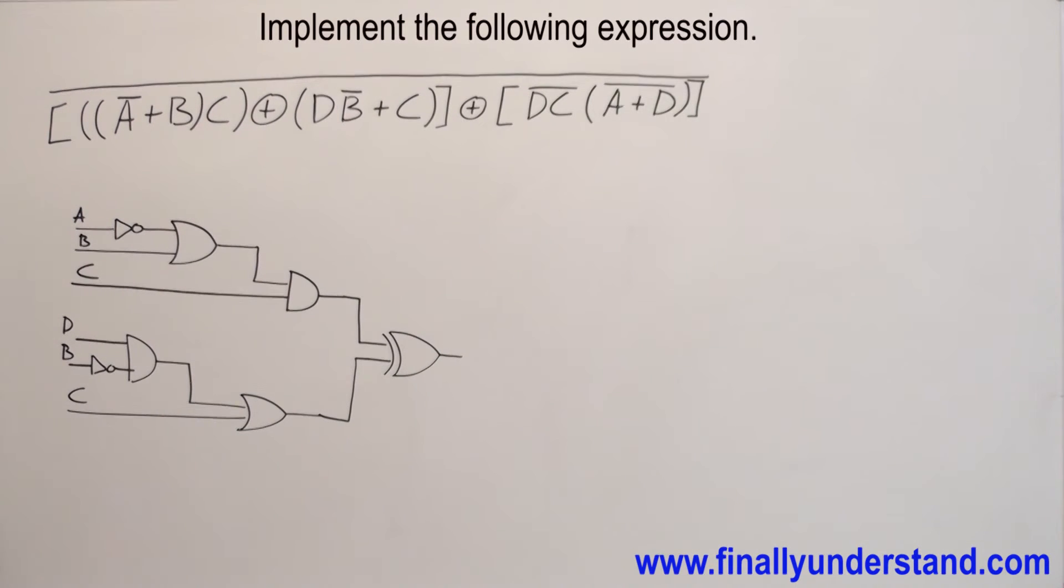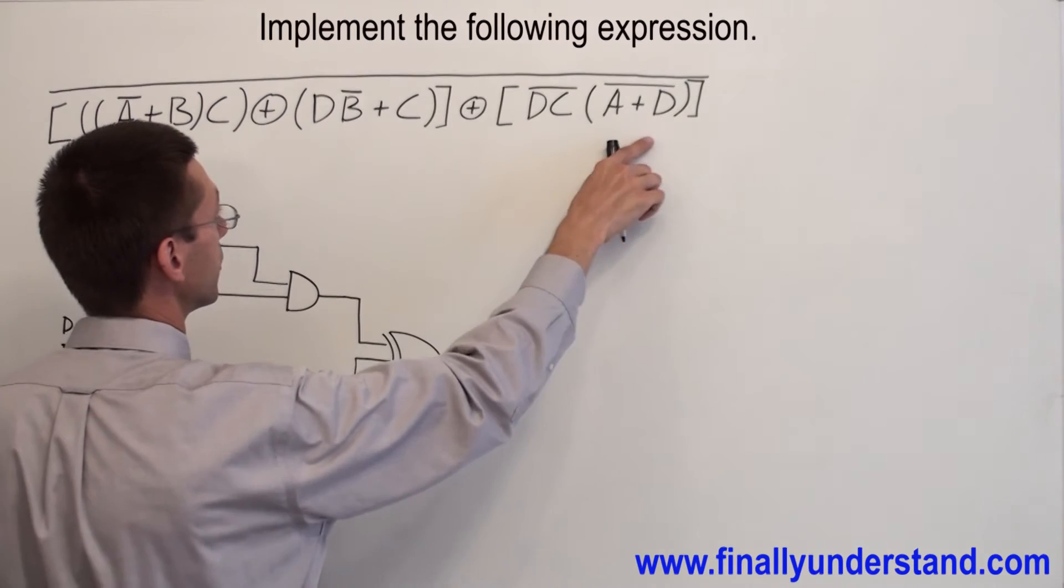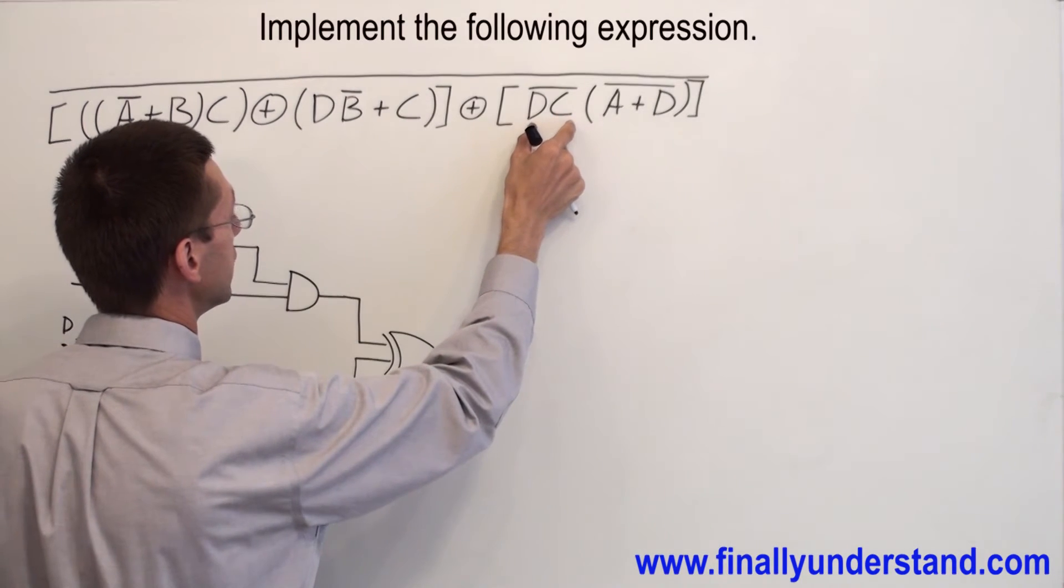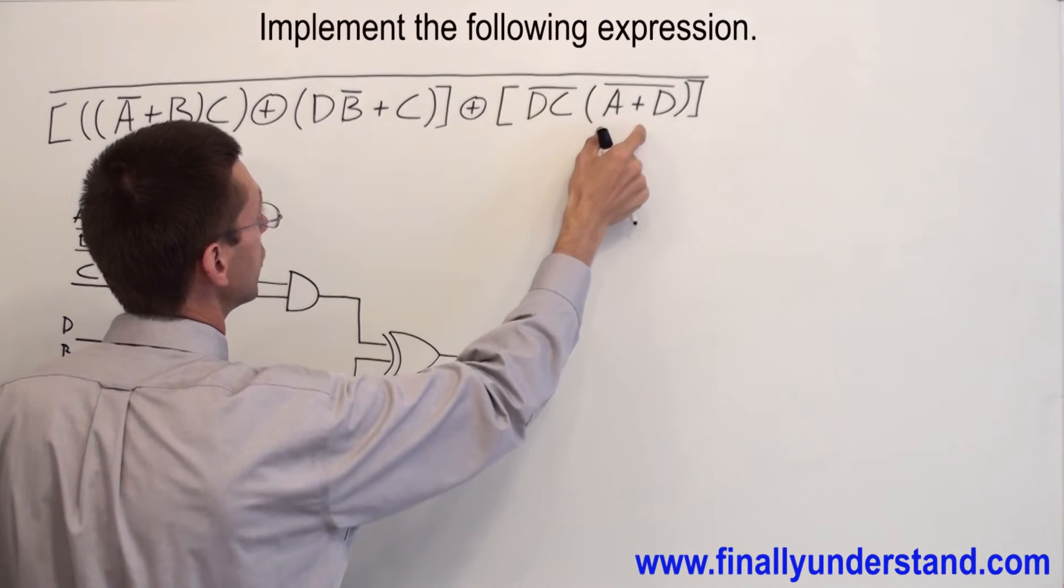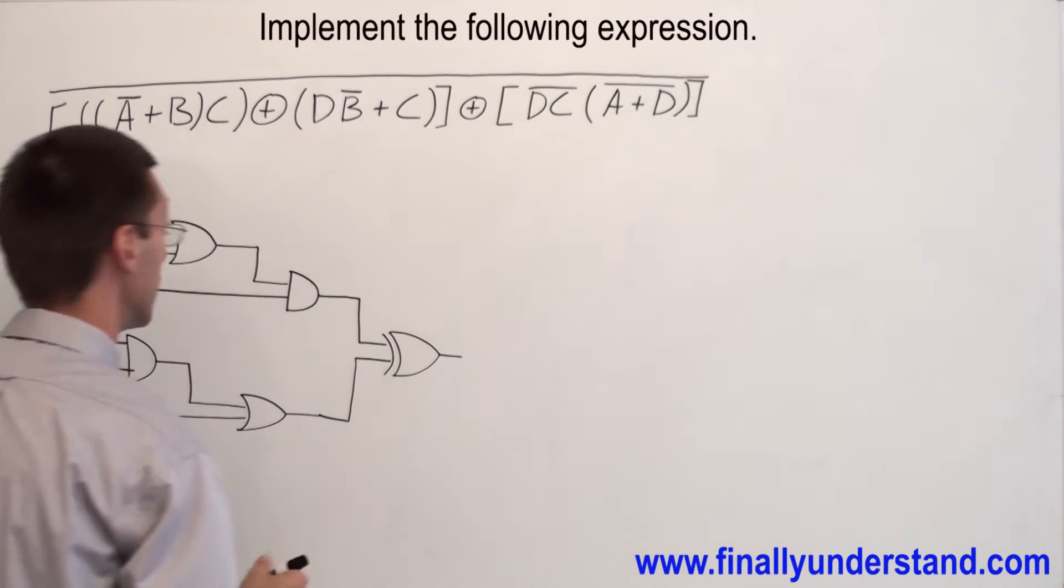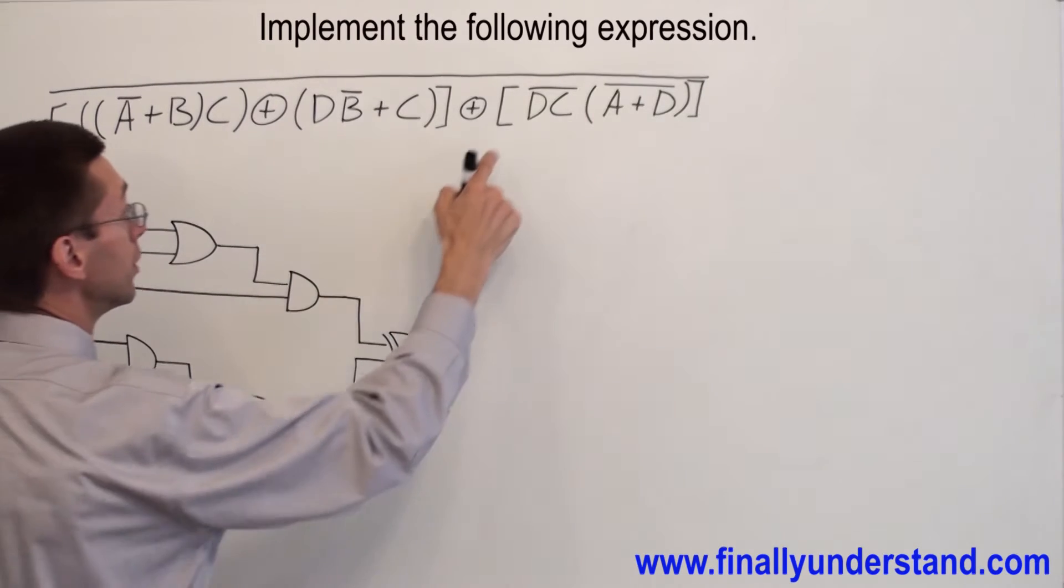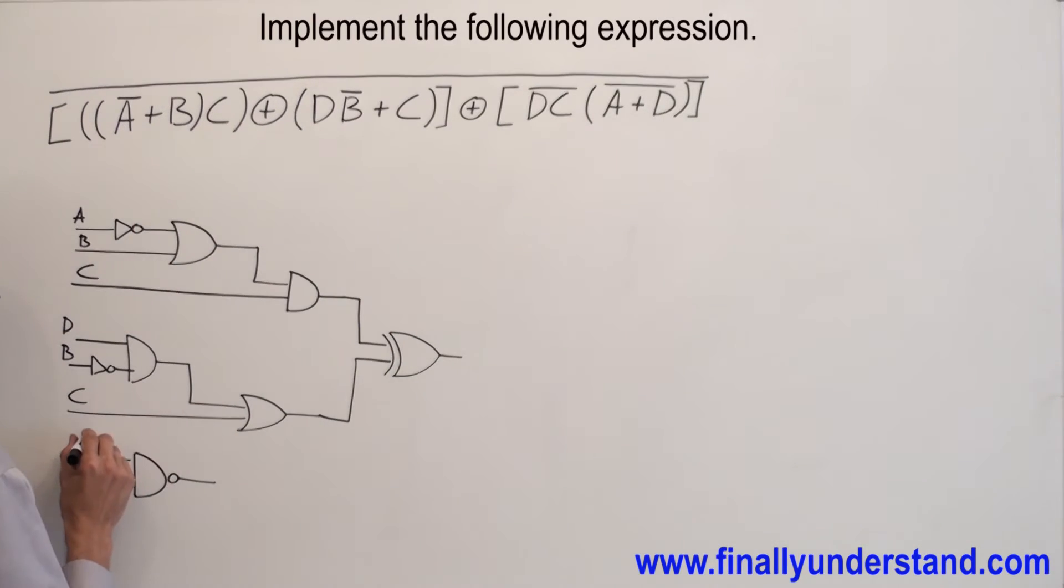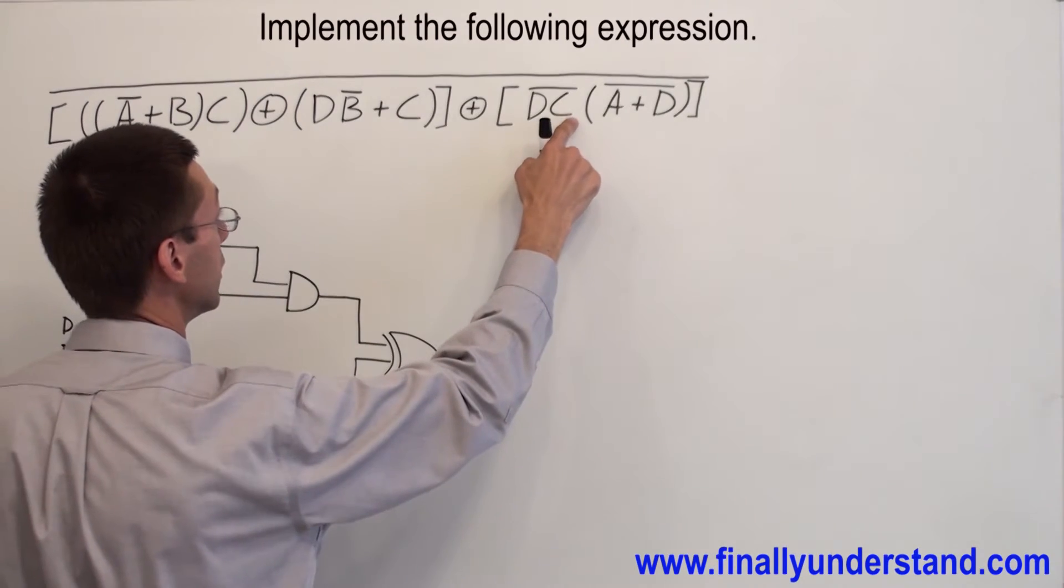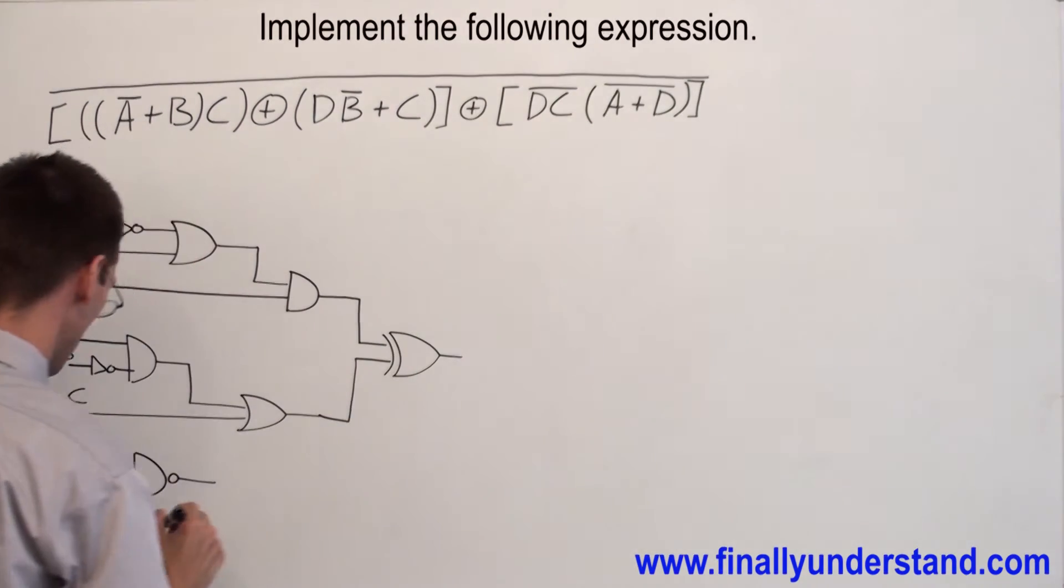Now, the second part is a NAND gate ANDed with a NOR gate. I have a NAND gate with inputs D, C, and with a NOR gate.